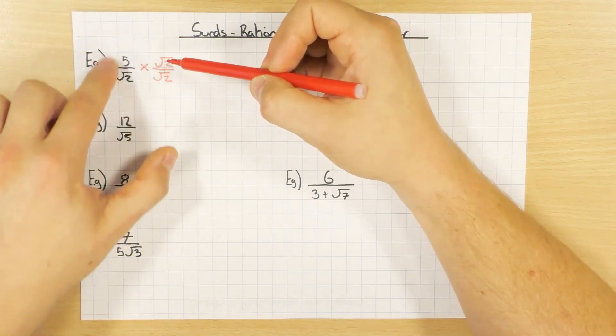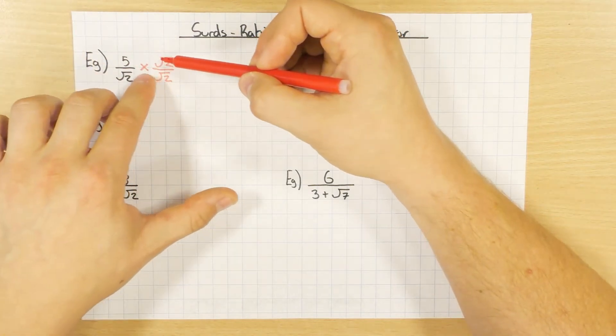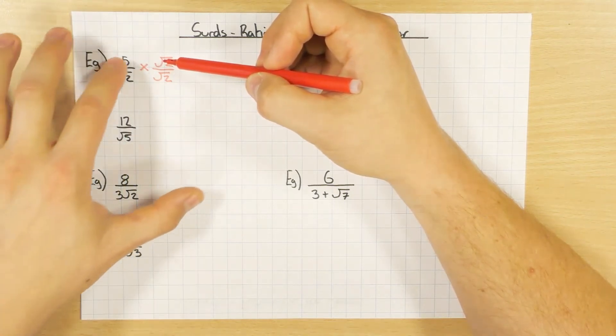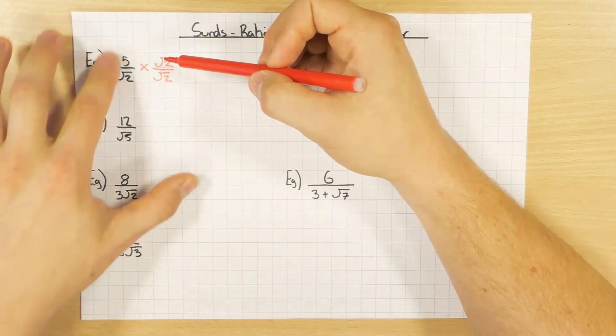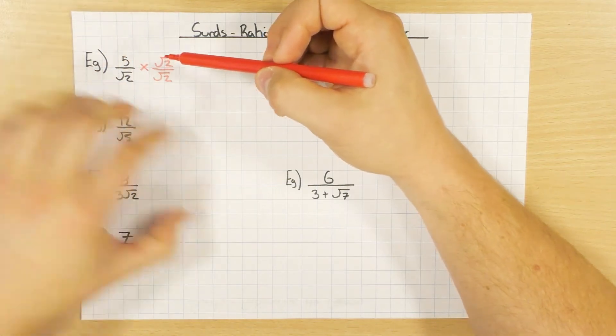So what I'm actually doing is just timesing this by 1. Obviously, I'm timesing it by root 2 and timesing by root 2, but that's why I'm allowed to do it, because it doesn't change the actual equivalent value, it's still the same.